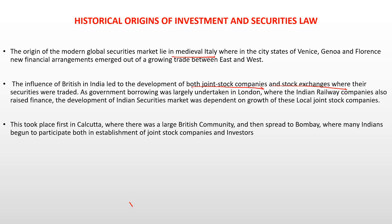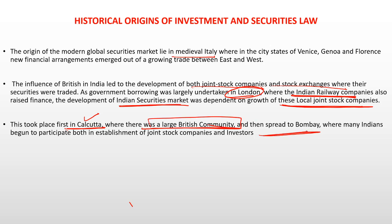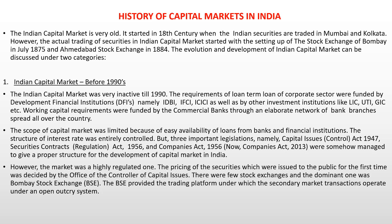Government borrowings were largely undertaken in London, where the Indian railway company also raised finance. Local joint stock companies first took shape in Calcutta, where there was a large British community. The history of the capital market in India is very old — it started in the 18th century, initially in only two places: Mumbai and Kolkata. It started in Calcutta and later spread to Mumbai.